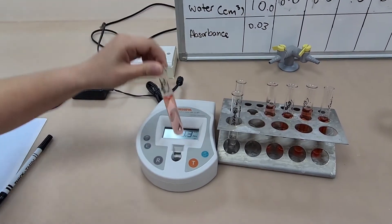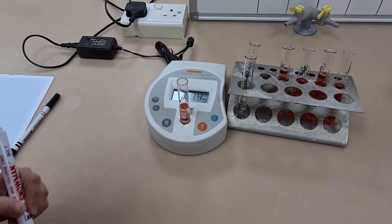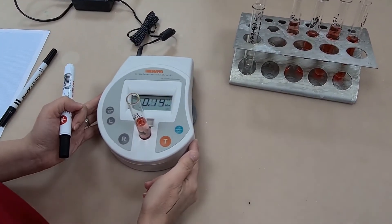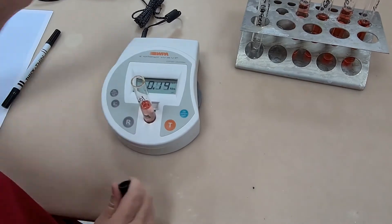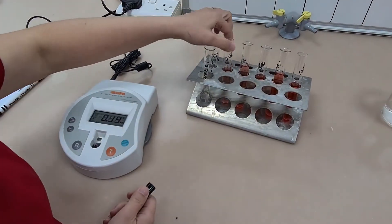Then moving on to my next dilution I can simply press T to test it, wait for a second and I take my reading from the digital screen. Then I'm going to repeat the same process with my other dilutions.